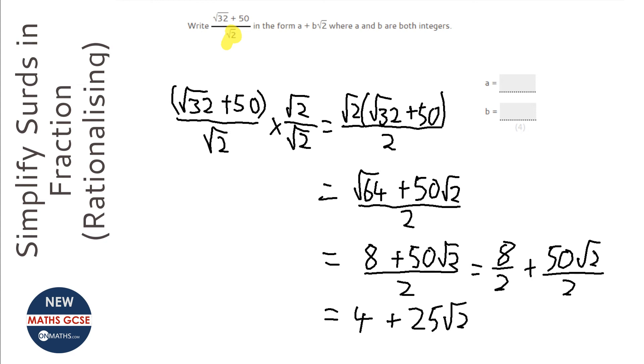So it's asking for A and B. Now, A is the number on its own, which is 4, and B is the 25, so it's the number before the square root of 2, which is going to be 25.